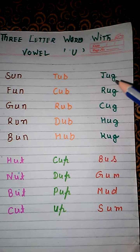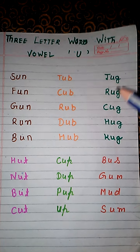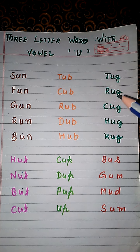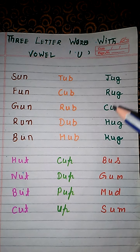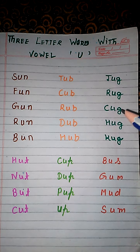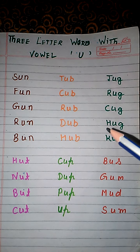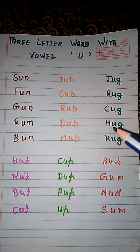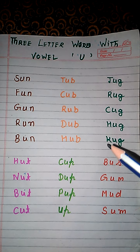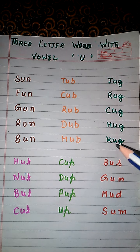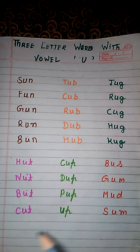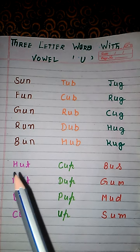J, U, G. Jug. R, U, G. Rug. C, U, G. Kug. H, U, G. Hug. K, U, G. Kug. Let's see some more words.